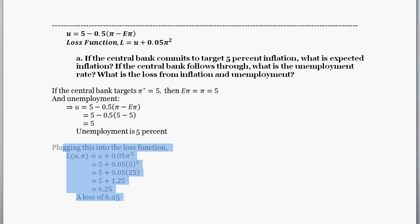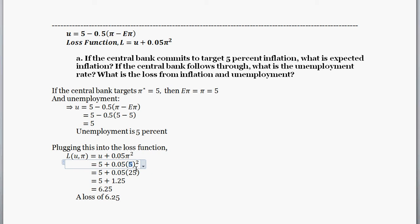Plugging those values into the loss function — the loss function is a function of unemployment and inflation — the unemployment rate is five and inflation is five. So the loss equals five plus 0.5 times five squared, which gives us a loss of 6.25.